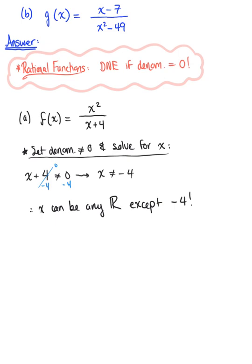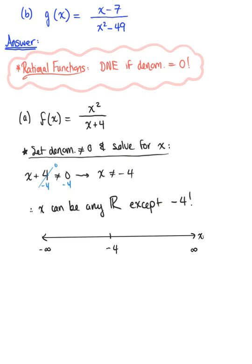Let's think about this on a number line. Here is the x-axis, and right there is where negative 4 exists. Moving to the right-hand side of negative 4, we're moving to positive x values, growing infinitely large. Moving to the left-hand side, we're moving towards negative values — negative infinity. We know x can be any real number except negative 4, so we take our hole punch and remove that point from the number line. X can be anything greater than negative 4 approaching positive infinity, or anything less than negative 4 approaching negative infinity.